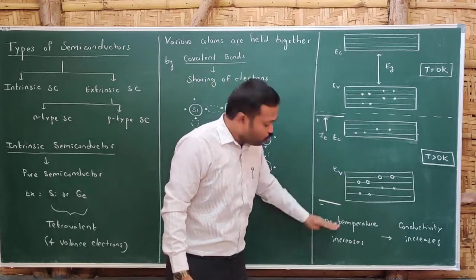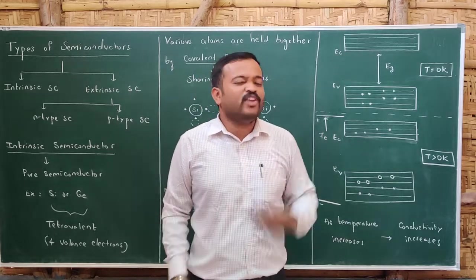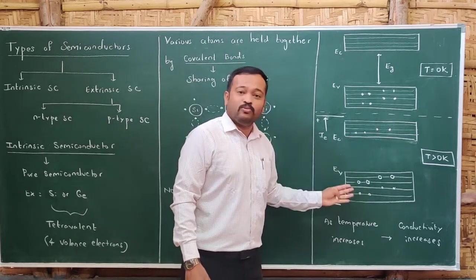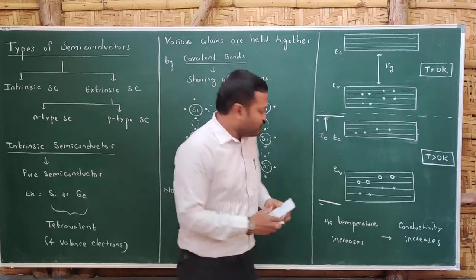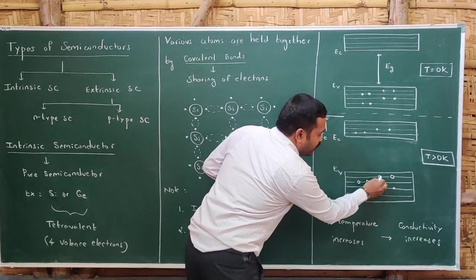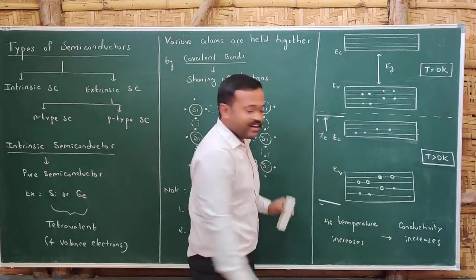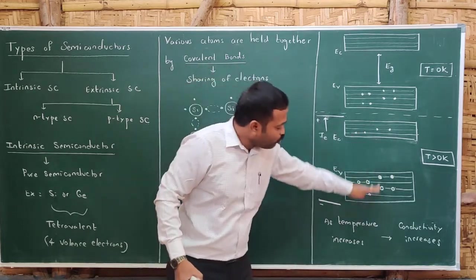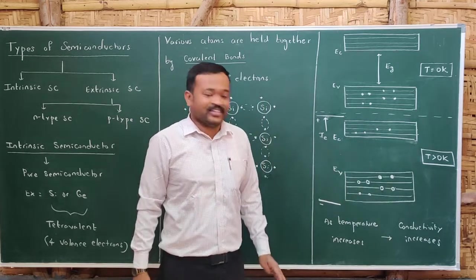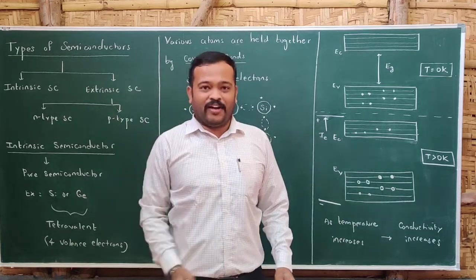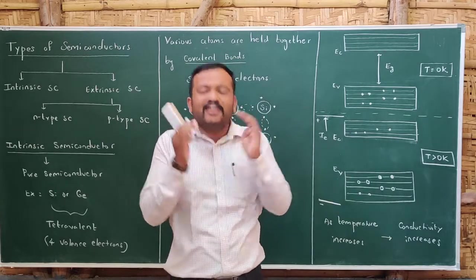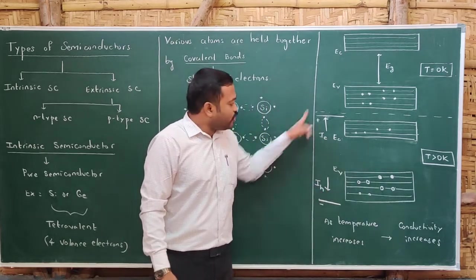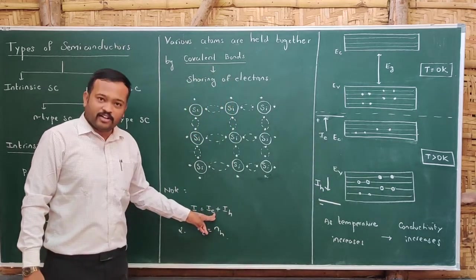Holes move towards the negative potential. But holes actually never move — when the electric field is created, the electrons in the valence band also move since they don't require much energy to move within that band. When a valence electron moves into a hole, a new hole is created in its place. So the electrons are actually moving, but we observe that holes appear to move towards the negative potential. The current due to motion of holes is called IH. The total current is the sum of electron current IE plus hole current IH.